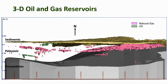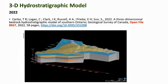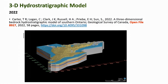This slide shows a 3D view of oil and gas reservoirs in the subsurface of Southern Ontario in the model, with pink being natural gas and green being oil, looking north and showing all reservoirs with recorded production. The Oil, Gas and Salt Resources Library in London has recently created a 3D print of the hydrostratigraphic model. The red is the Precambrian basement, the gray colors are aquitards which dominate the subsurface stratigraphy of Southern Ontario, and the clear colored layers are the regional aquifers. Links to download the published 3D model and associated publications are shown on this slide.